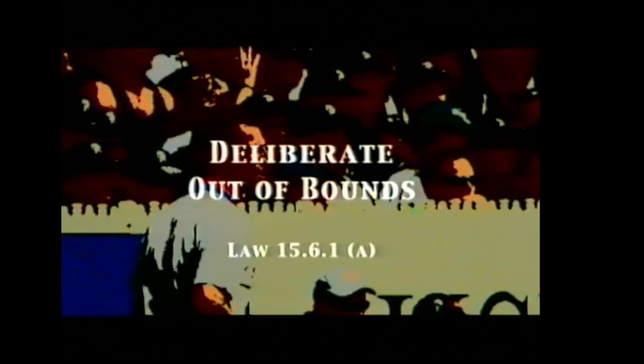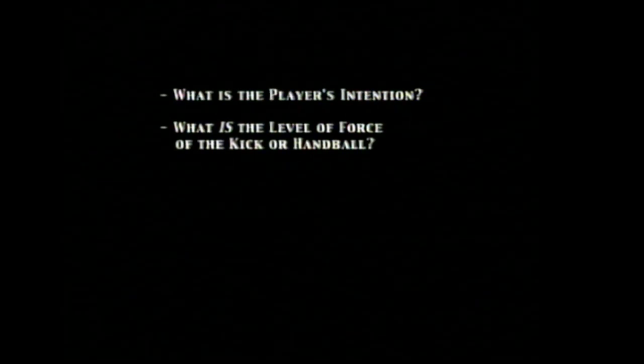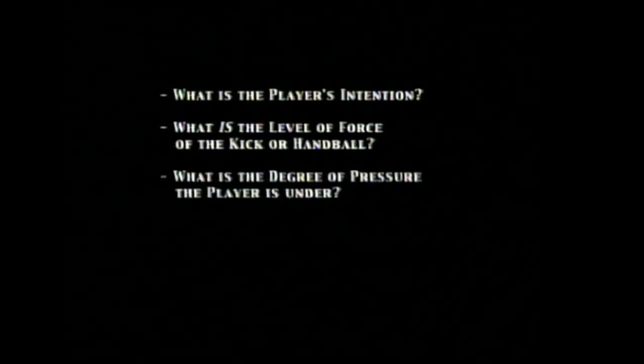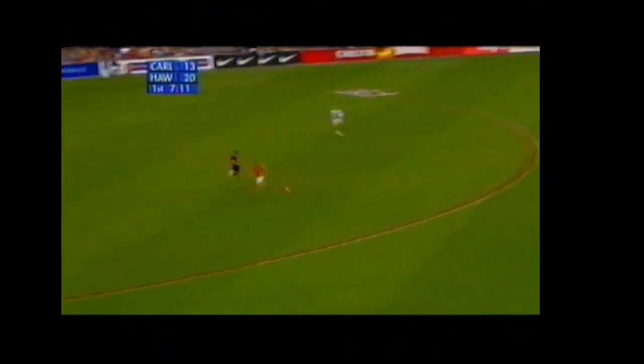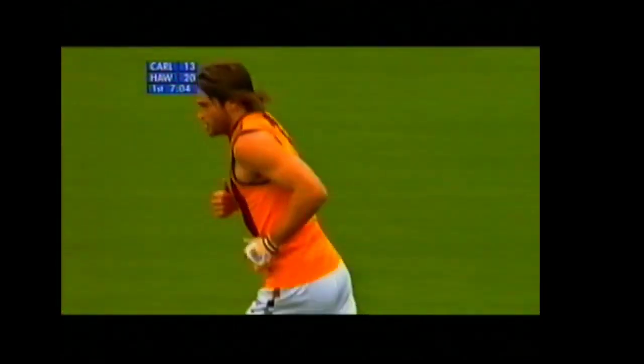We turn our attention to the rule regarding deliberate out-of-bounds. When an umpire determines a deliberate out-of-bounds decision, he will take into account the following criteria: What is the player's intention? What is the level of force of the kick or handball? What is the degree of pressure the player is under? Is there a teammate in the vicinity of where the ball crosses the boundary line? Here, Jonathan Haye, while under some pressure, forcefully and intentionally kicks the ball over the boundary line.